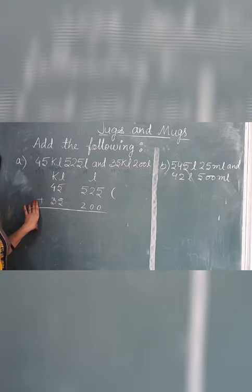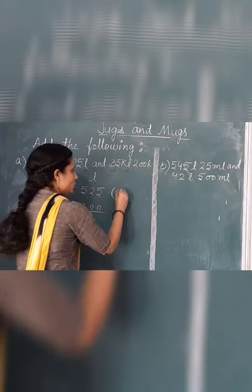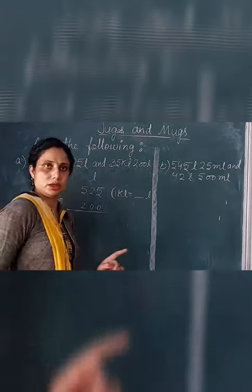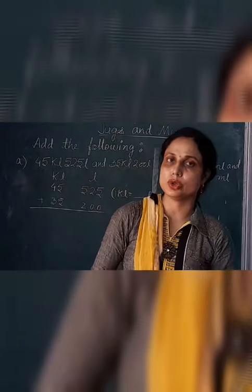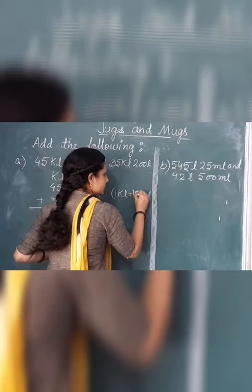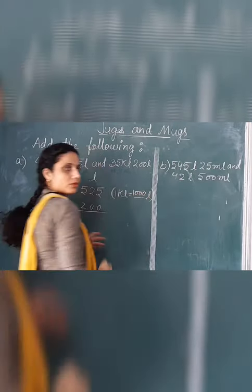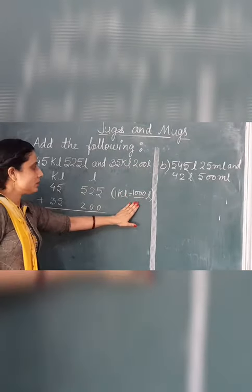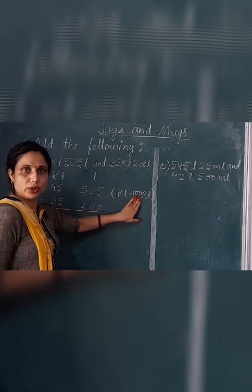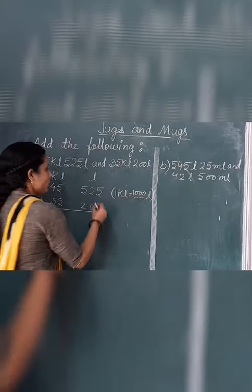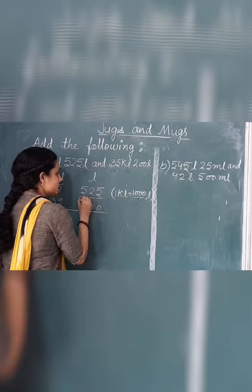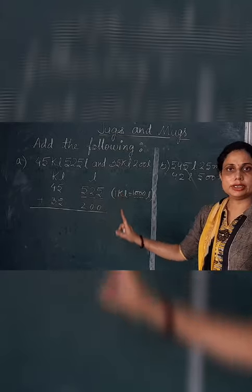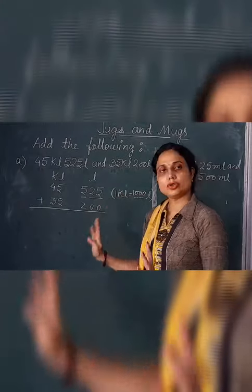We need to know the relation between both units. The relation is: one kiloliter is equal to one thousand liters. Look at the table — one kiloliter equals one thousand liters. How many zeros are here? Three zeros. So we have to keep three digits in the liter column.